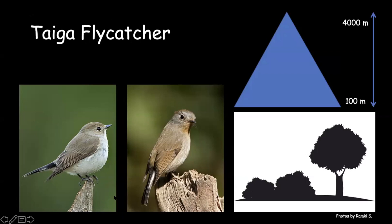The taiga flycatcher, previously clubbed with red-breasted flycatcher, has completely dark upper tail coverts and a very dark lower mandible base. The red is restricted only to the throat and not to the breast. A bird of major undergrowth, more common towards the northeastern part of India. Both taiga and red-breasted flycatcher can be seen together in many habitats. Just like most flycatchers, they can be very particular about their wintering habitat and may return to the same area year after year.